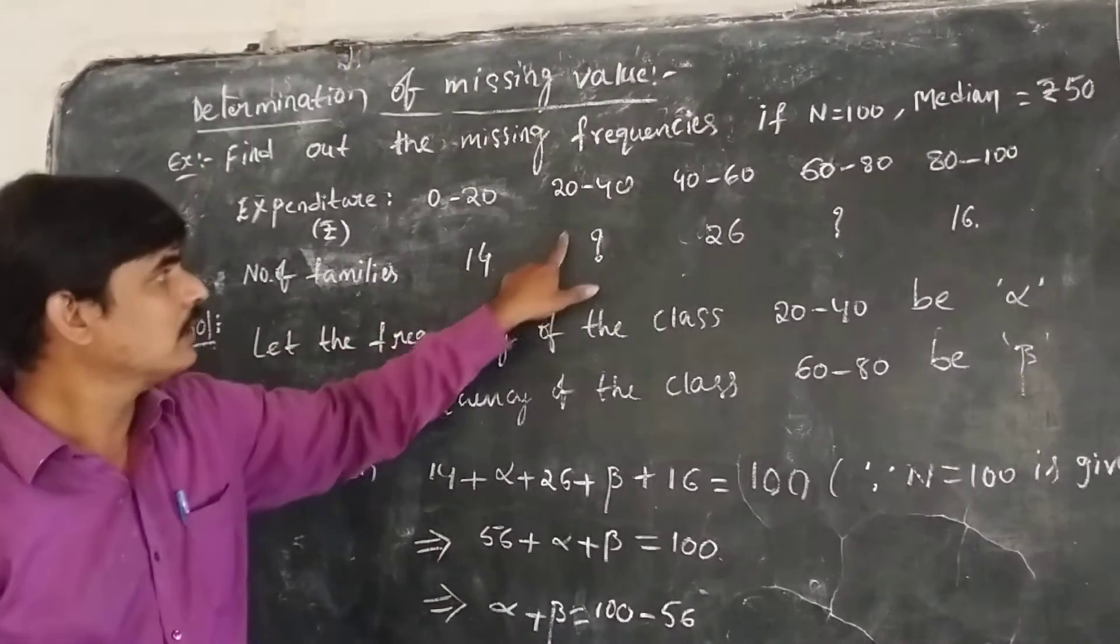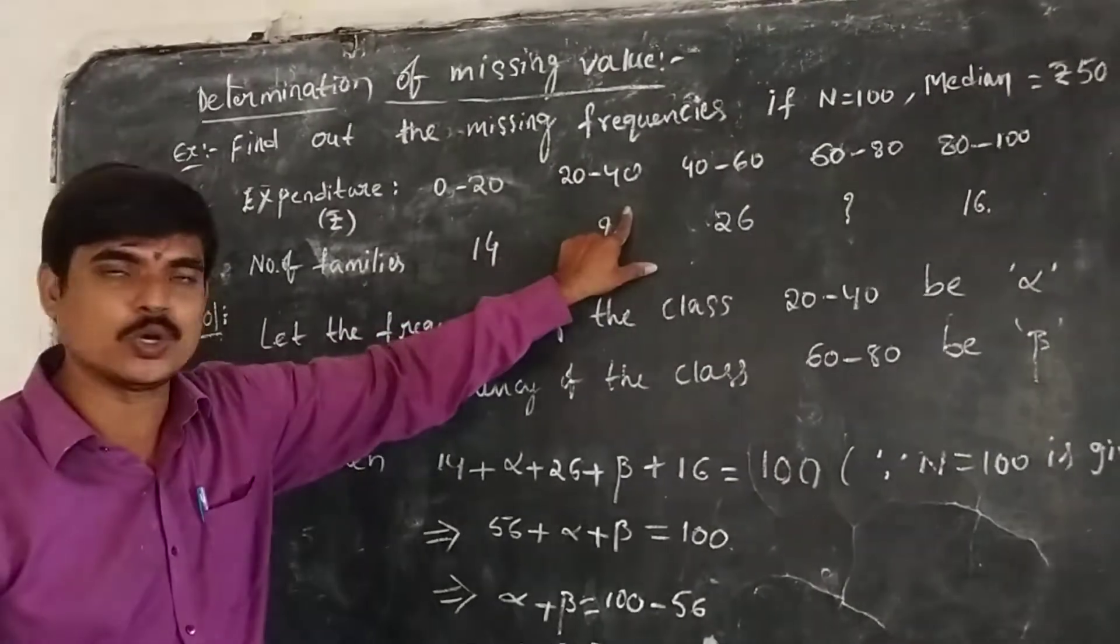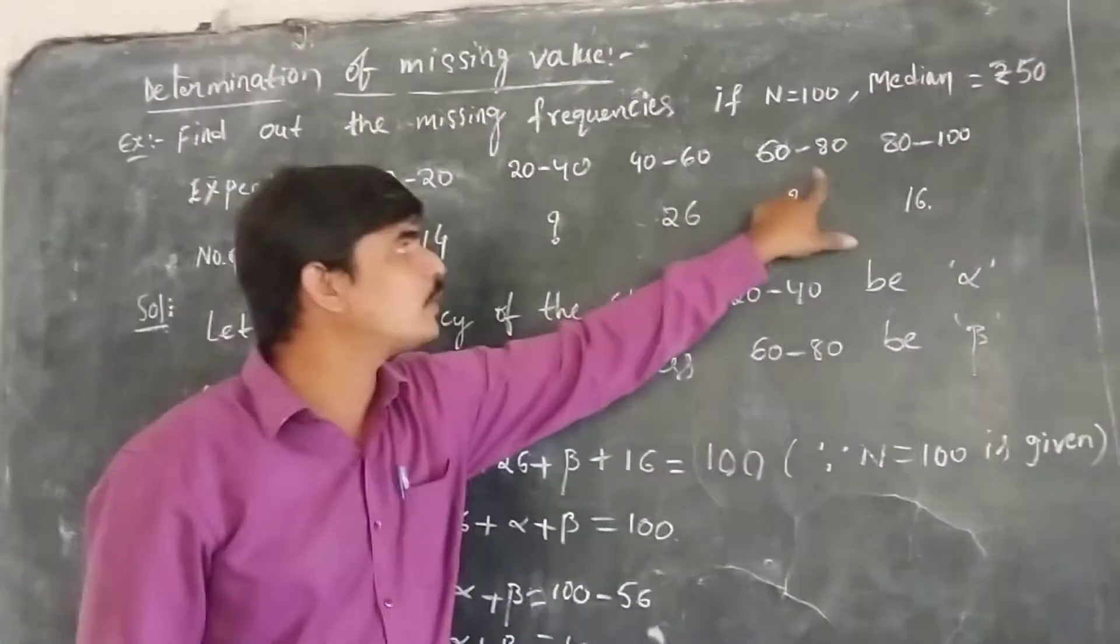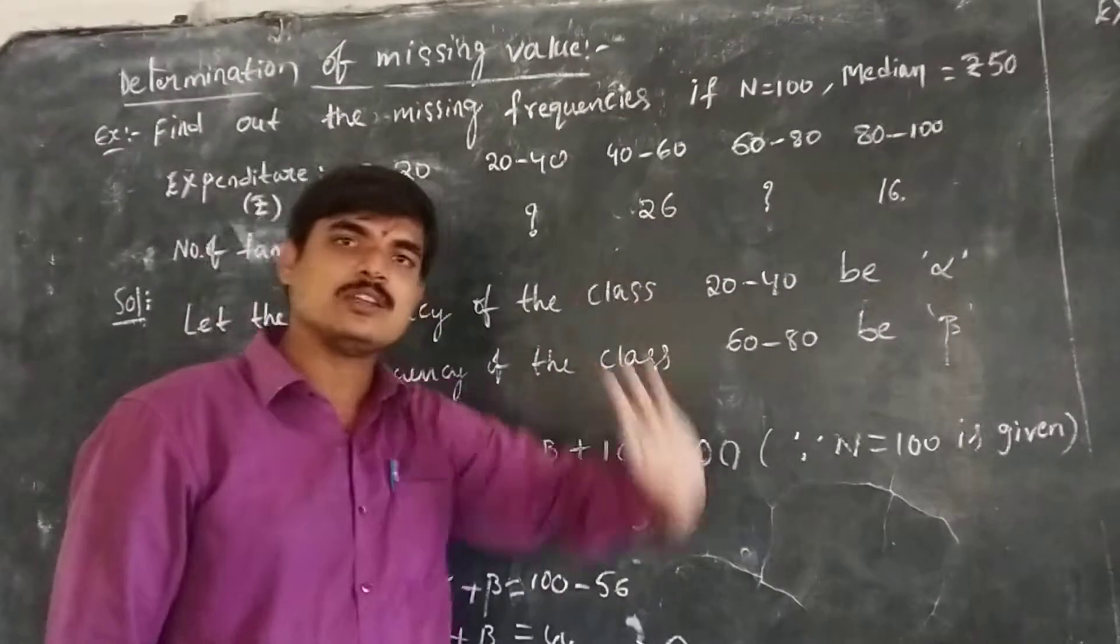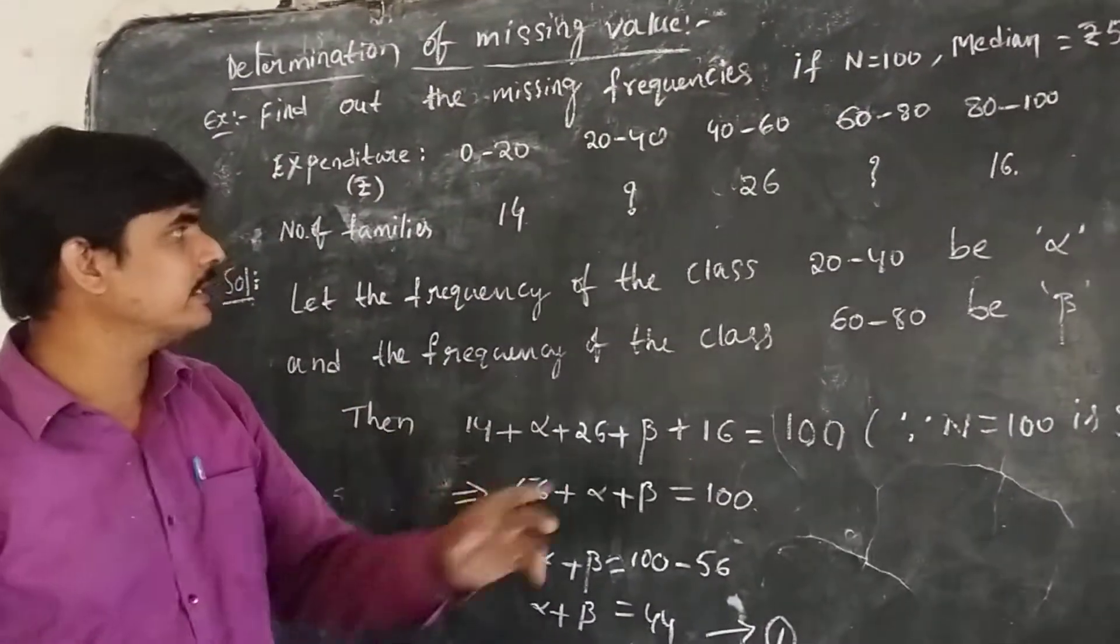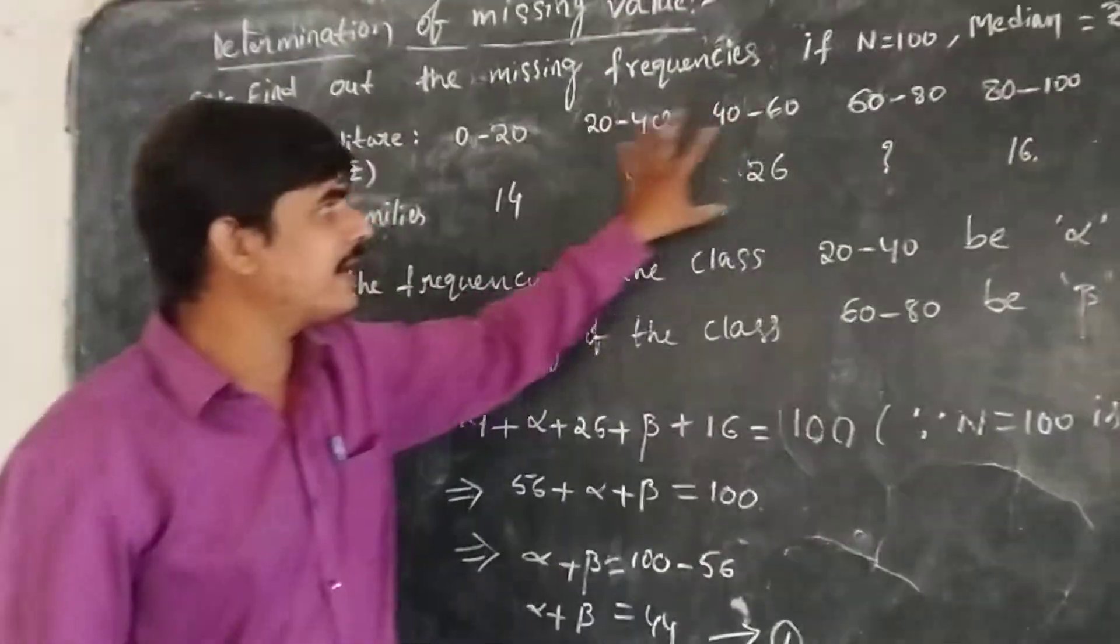The frequency, number of families, is given as 14. The value here for 20 to 40 is not known, 26 is given, 60 to 80 is also not known, and another value is 16. We need to calculate the values of these two frequencies.